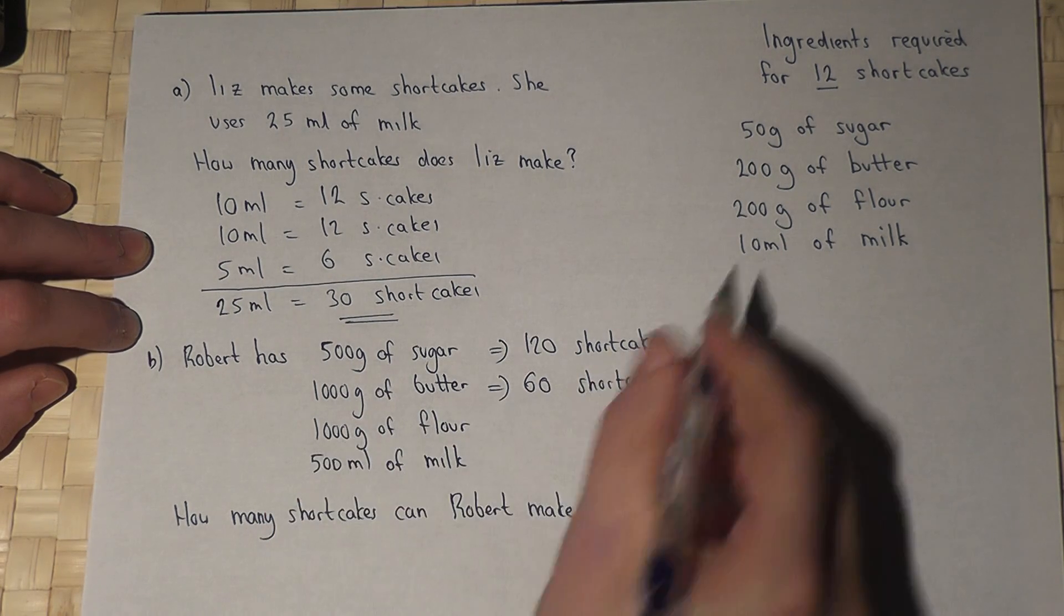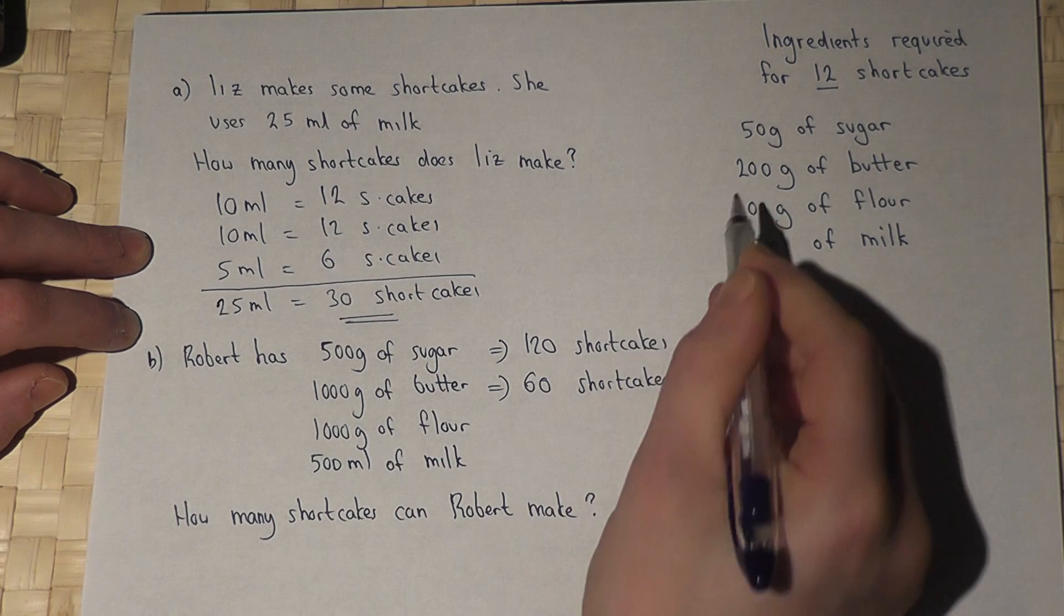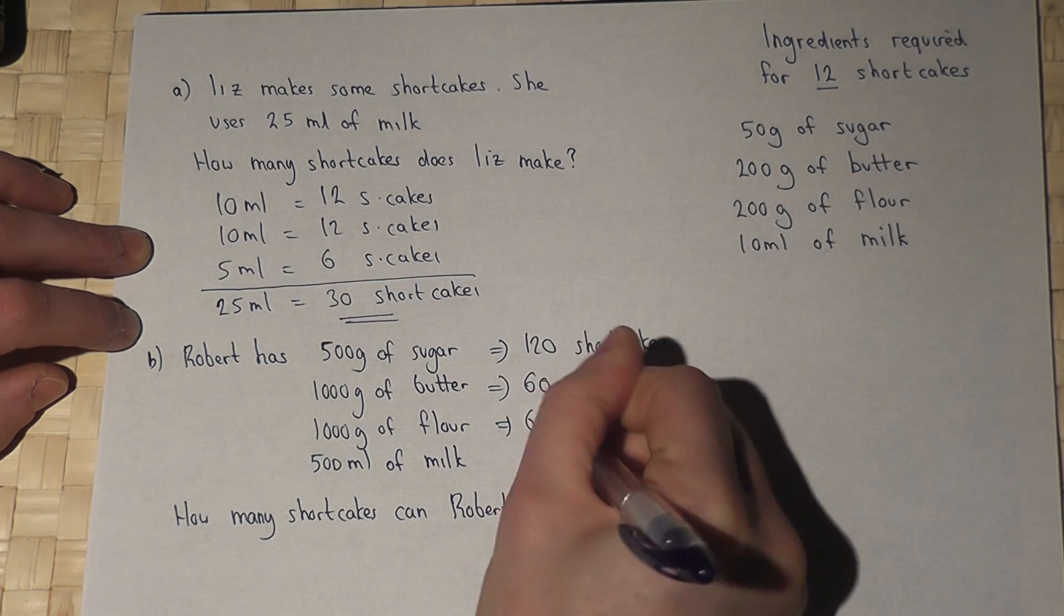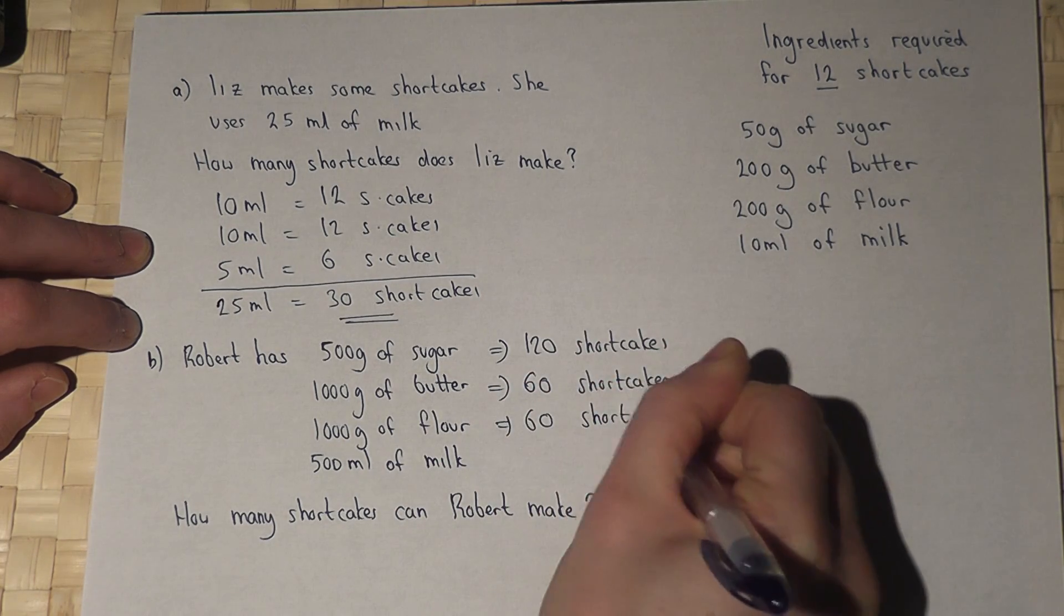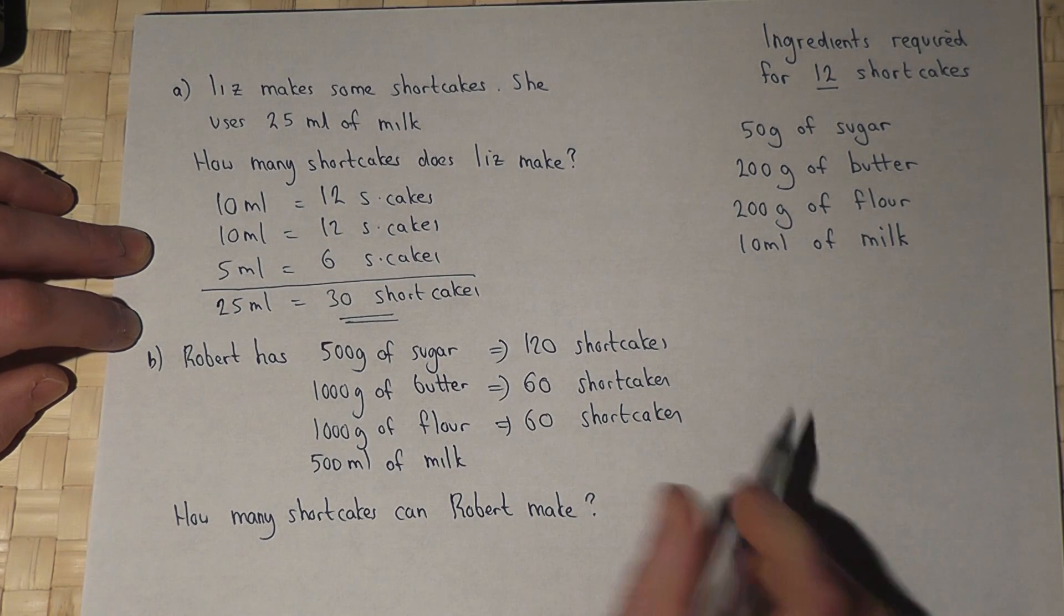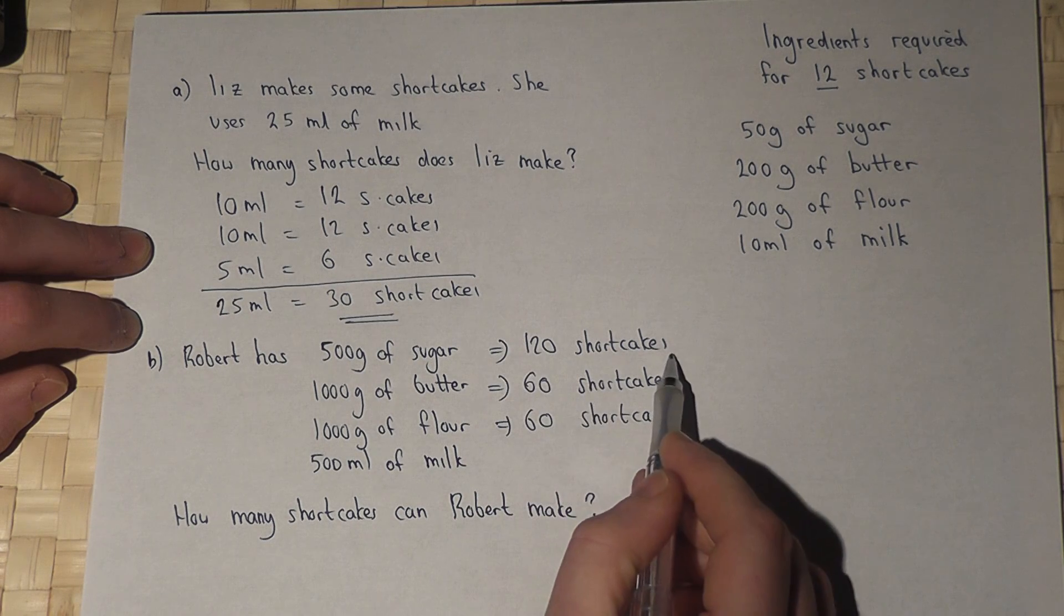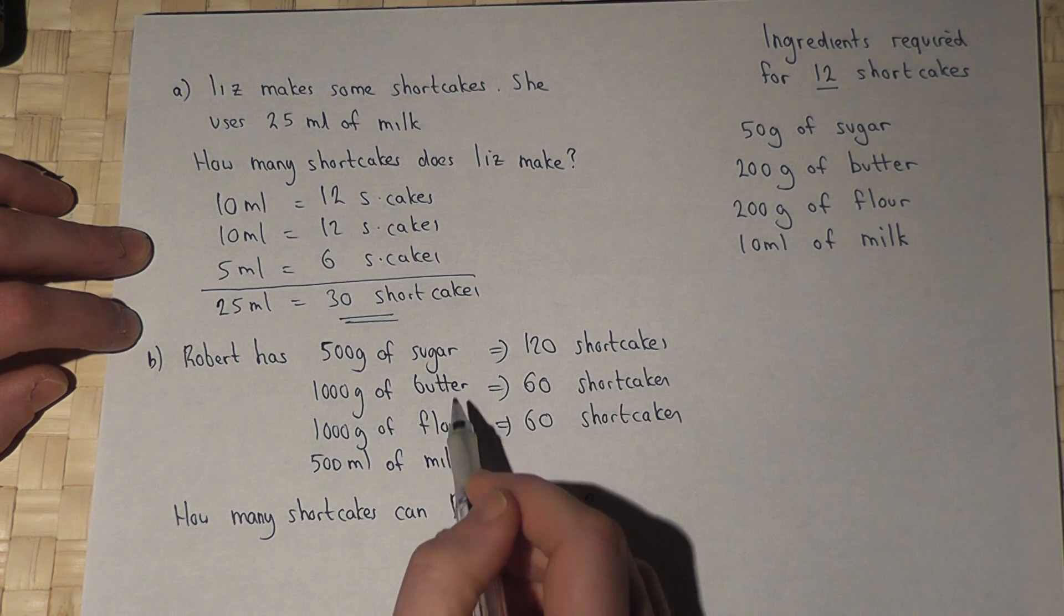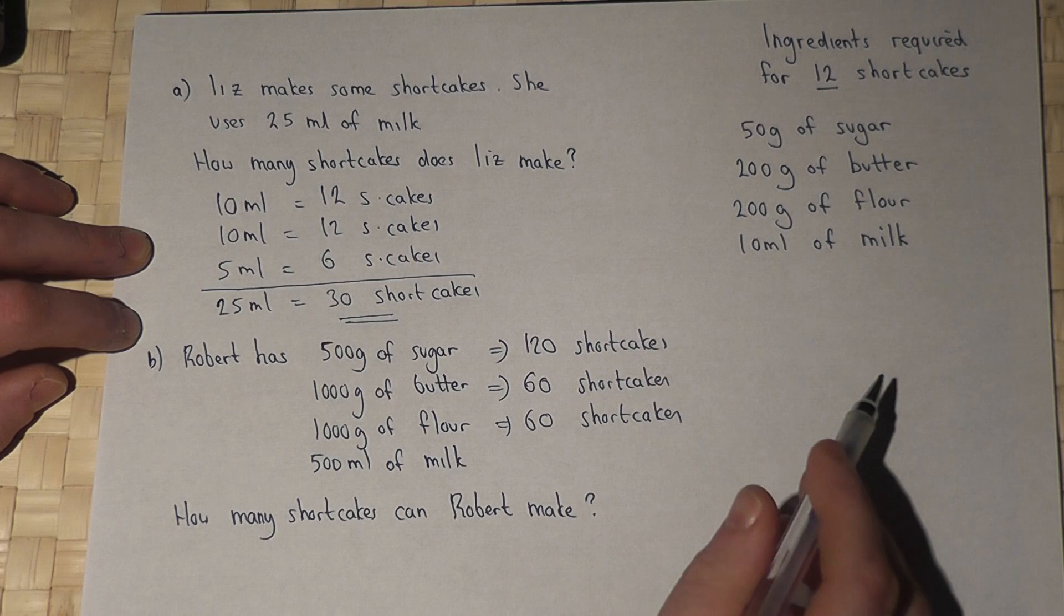Again, 1,000 is 5 times 200. Again, 5 times 12 is 60. So even though he's got enough sugar to make this many shortcakes, the amount of butter and flour limits Robert to 60 shortcakes.